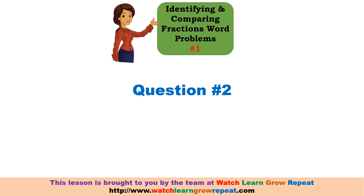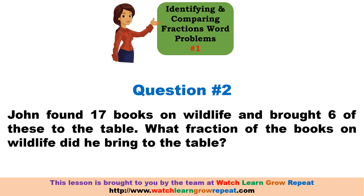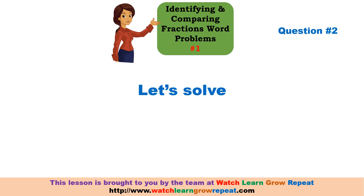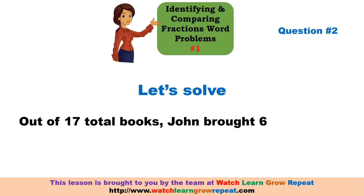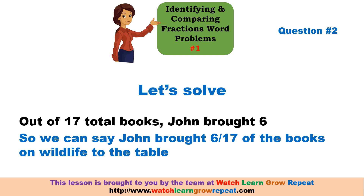Question number two: John had found 17 books on wildlife and had brought six of these to the table. What fraction of the books on wildlife did he bring to the table? We are told that out of the 17 total books, John had brought six. So John had brought six by 17 of the books on wildlife to the table.